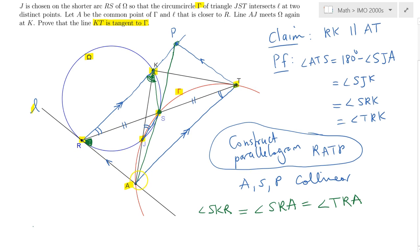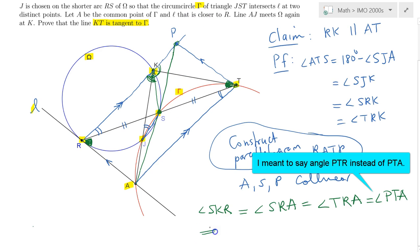Notice that TRA is simply equal to PTA because of the parallelogram—these are alternate interior angles given that PT and RA are parallel lines. But this is beautiful because we have just established that angle PKS, which is 180 minus angle PKS, equals angle PTS, suggesting that quadrilateral PKST is cyclic.